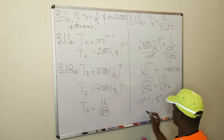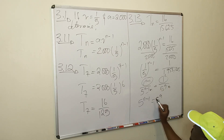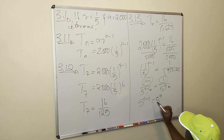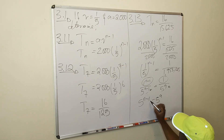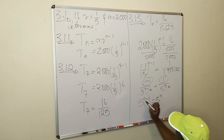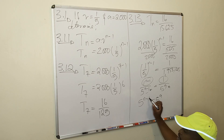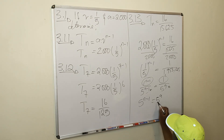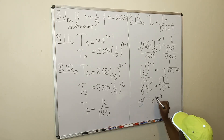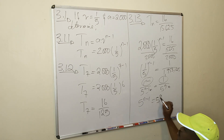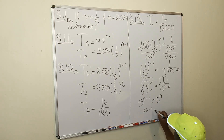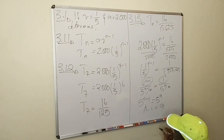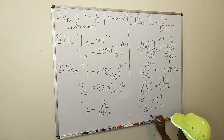Since 5^(n−1) = 5⁹ and these two expressions are exactly the same base, in order for them to be equal, the exponents must also be the same. So n−1 must equal 9. In order to achieve that, n must be 10, because 10 minus 1 is 9. The bases are identical, so the exponents need to be identical, meaning n−1 = 9, therefore n = 10.